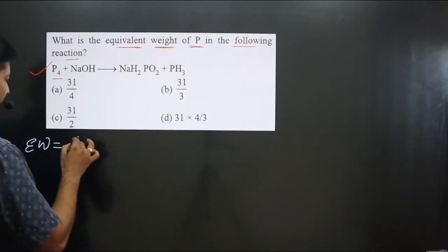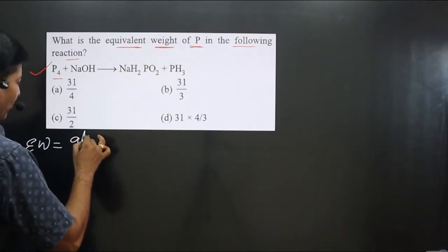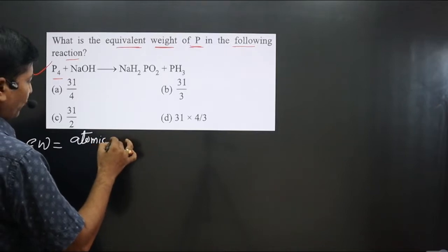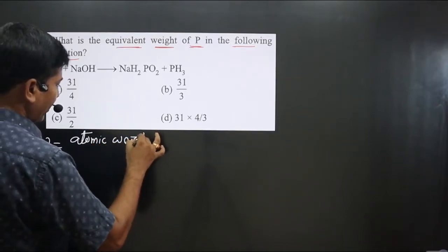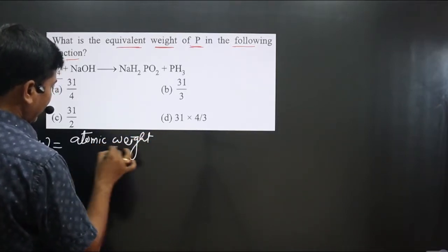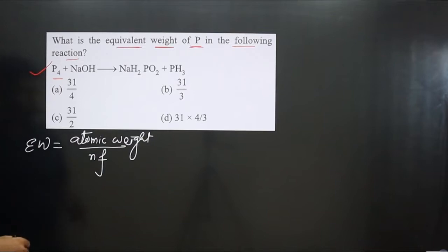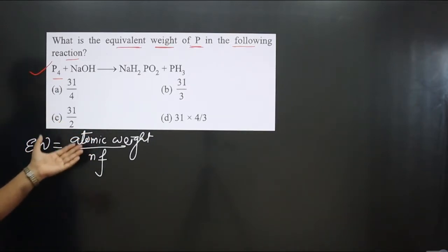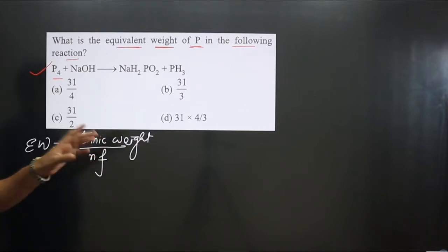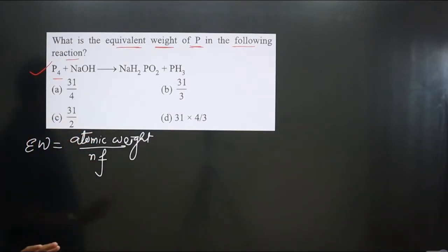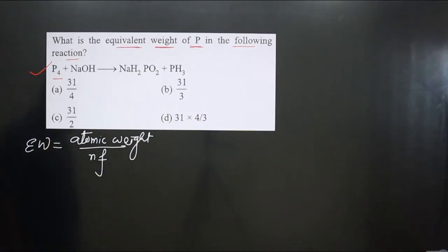For a single element, the equivalent weight formula is: equivalent weight = atomic weight divided by n-factor. The atomic weight for phosphorus we can get from the periodic table, and the n-factor value we can calculate from the reaction given.